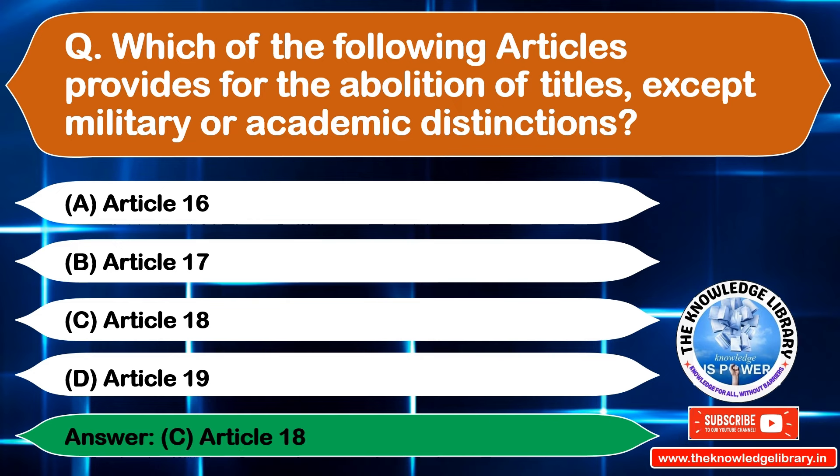The next question is: which of the following articles guarantees the freedom to manage religious affairs? Option A: Article 23, Option B: Article 24, Option C: Article 25, Option D: Article 26. The correct answer is Option D: Article 26.